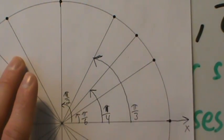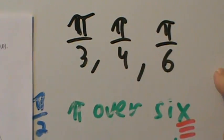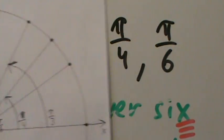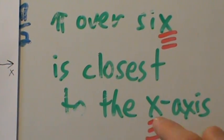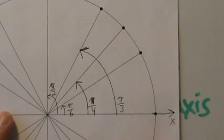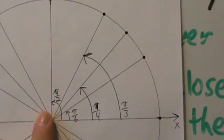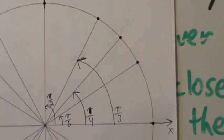So we've talked about several ways to remember the first quadrant angles. Larger denominator means smaller angle — the smallest angle is pi over 6, the next is pi over 4, the next is pi over 3. Or: pi over 6 is closest to the x-axis. Or: pi over 4 is half of pi over 2. Moving to the right from pi over 2, the denominators get larger: pi over 2, pi over 3, pi over 4, pi over 6.